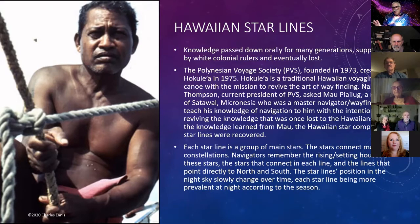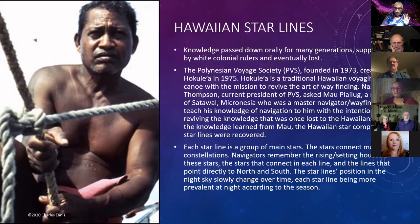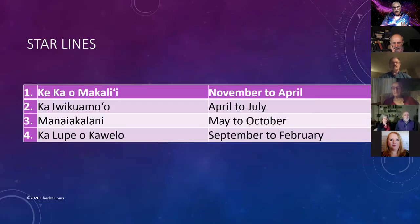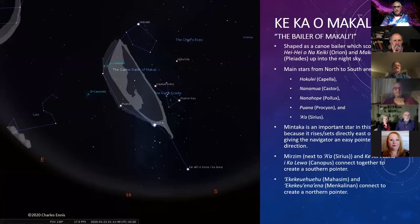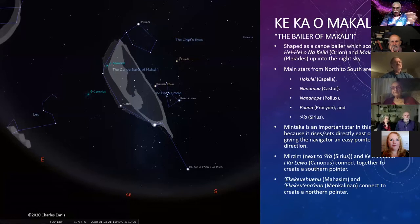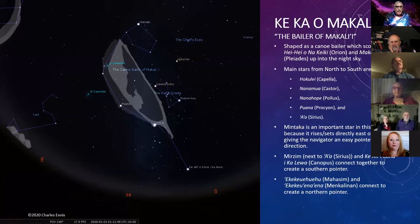Each star line is a group of main stars that connect, making constellations. Navigators remember the rising and setting houses of these stars, the stars that connect in each line, and the lines that point directly to north and south. The star lines' position in the night sky slowly changes over time, so each star line is more prevalent at night according to the season. The first star line is called Ke kaa o Makali'i, or the Baler of Makalii, shaped as a canoe baler. Like that ancient Maori sky, it all has to do with navigation across the ocean — the baler scoops up Orion and the Pleiades into the night sky.